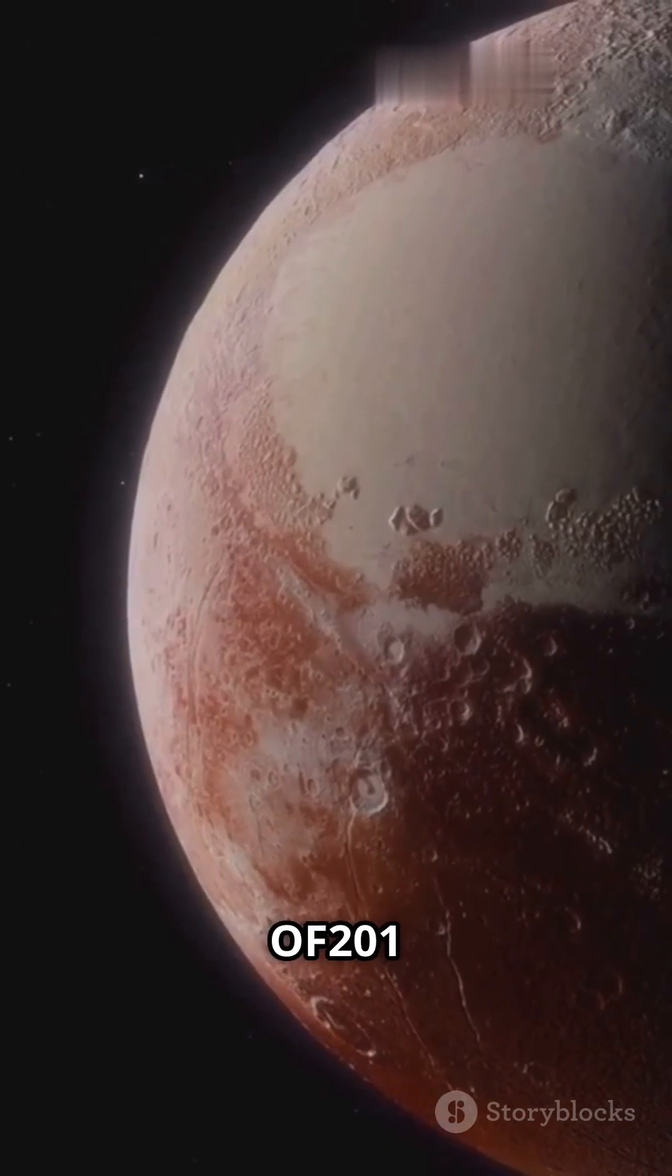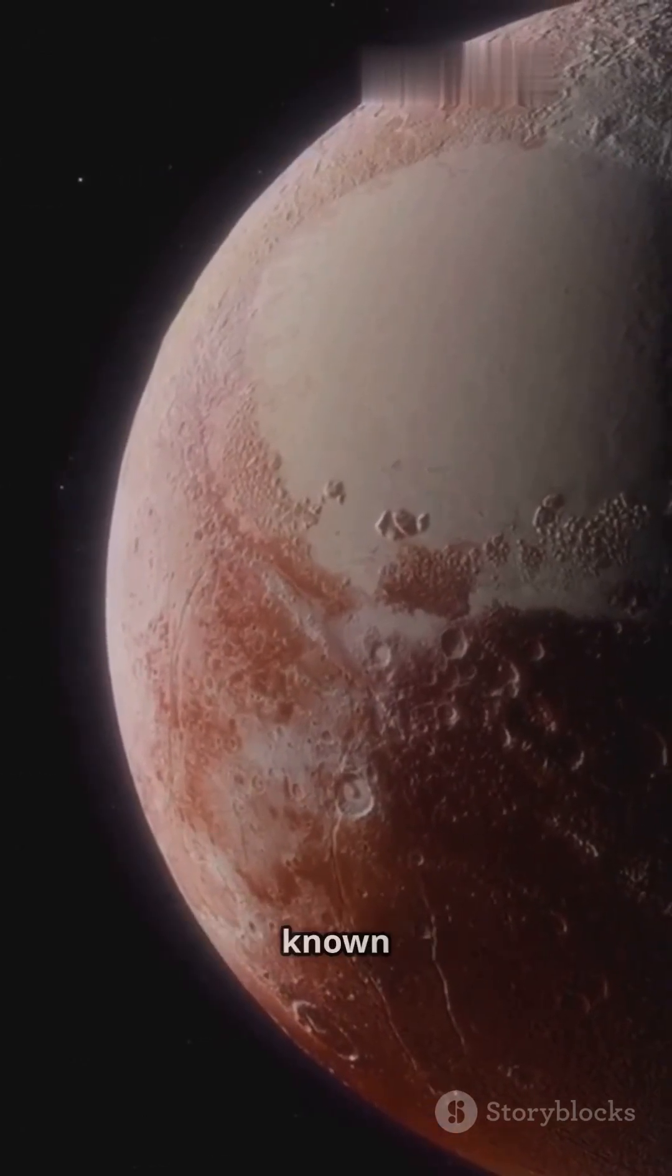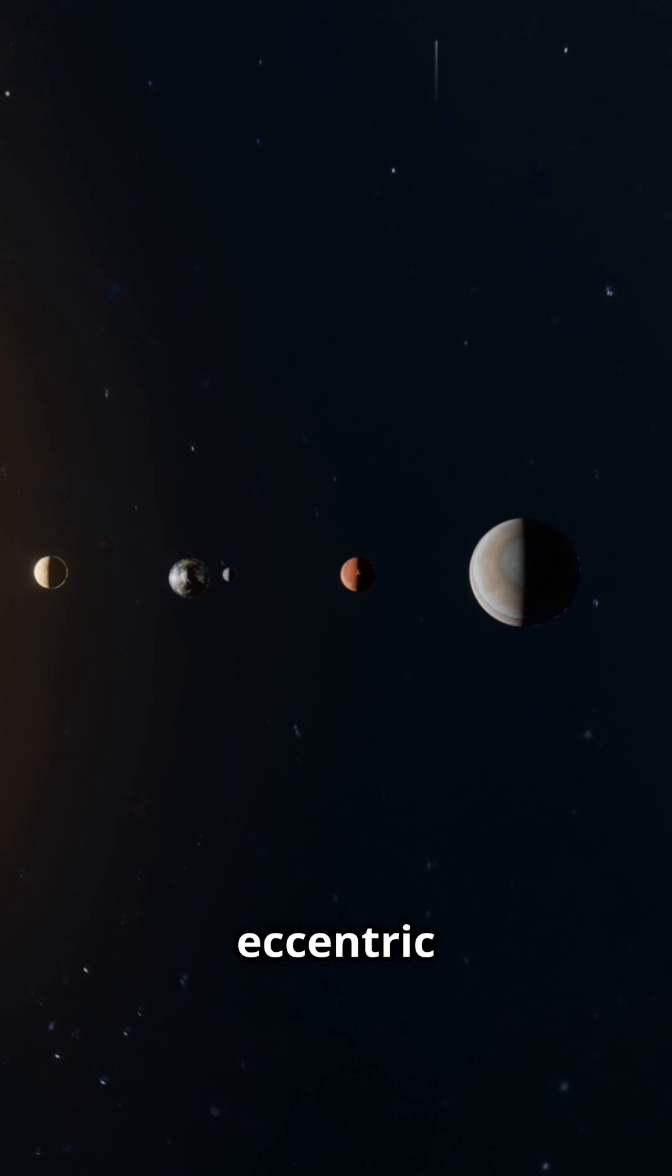2017 OF201 ranks as the second largest known object in its class. Its highly eccentric orbit suggests it's part of a hidden population of similar objects, potentially totaling about 1% of Earth's mass.